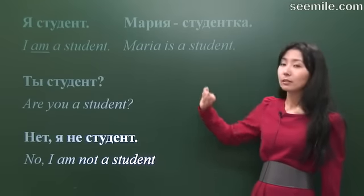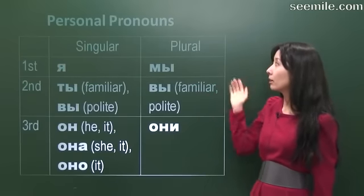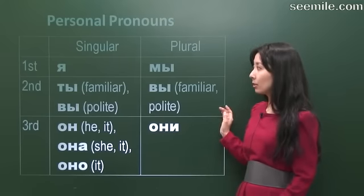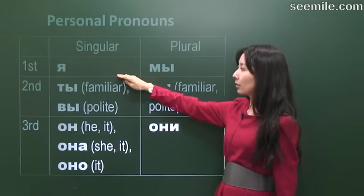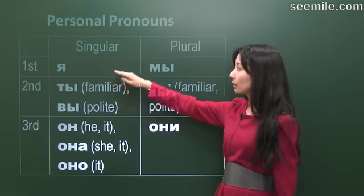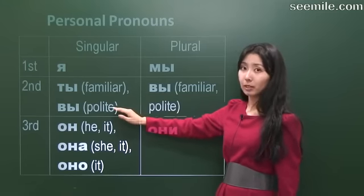So far, we have already met a few Russian pronouns, so let's have a closer look at them. Here are the personal pronouns that can be used as the subject of a sentence. Note that there are two variants for the second person singular, the plain one and the polite one, which you use in formal speech.